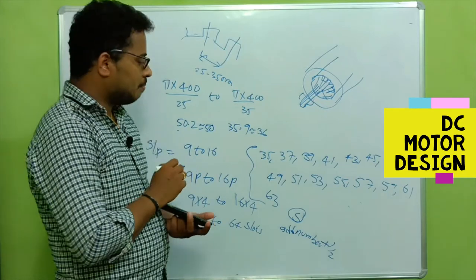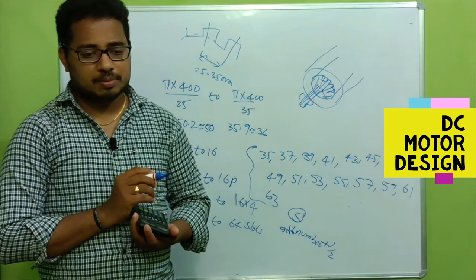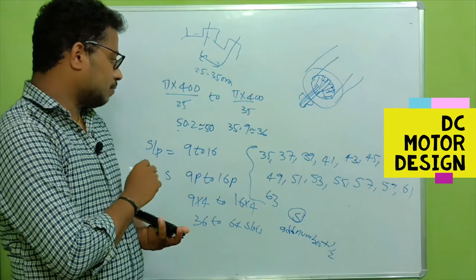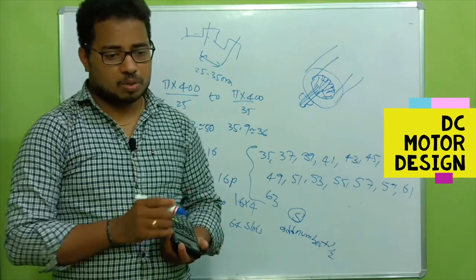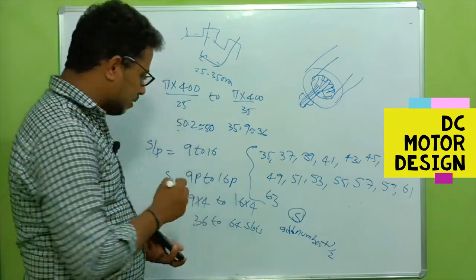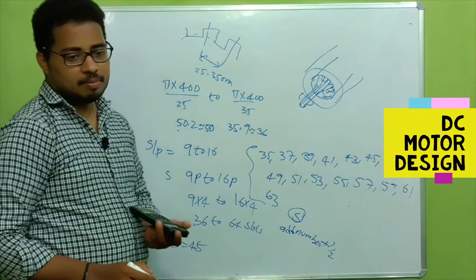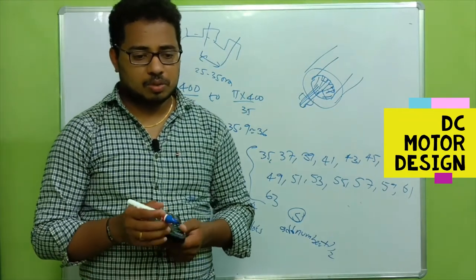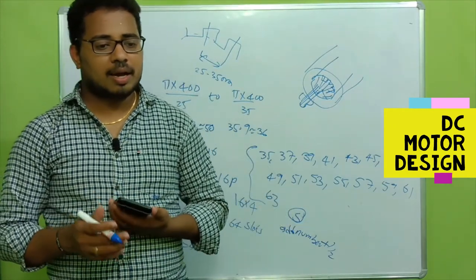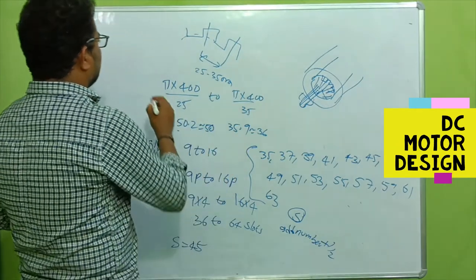One more thing to keep in mind is that the number of slots should not be a multiple of four. Considering all these constraints, we select armature slots equal to 45 for a better design. We also need to choose the number of coil sides per slot.